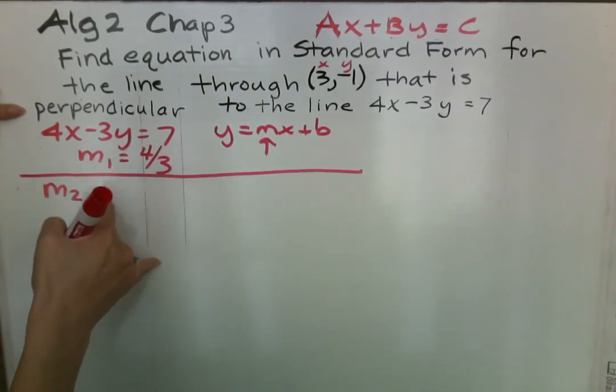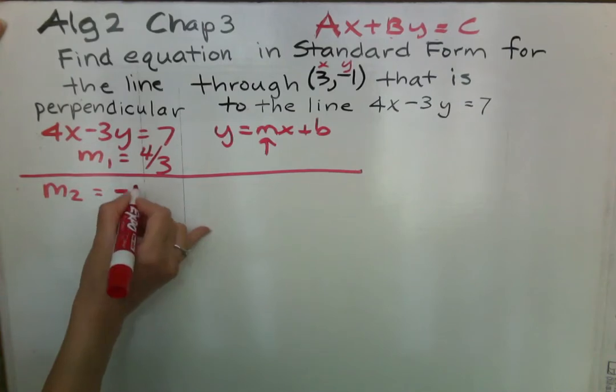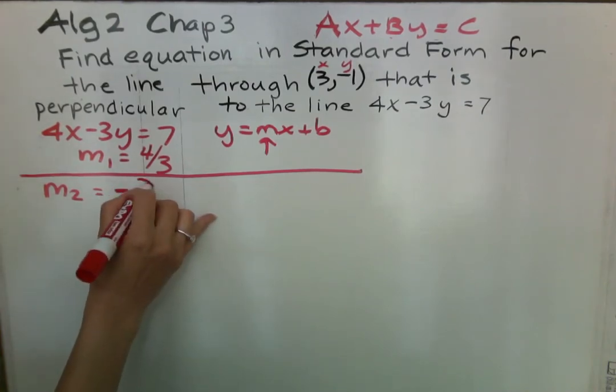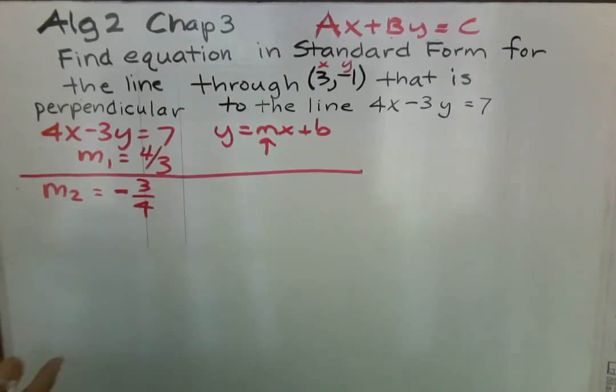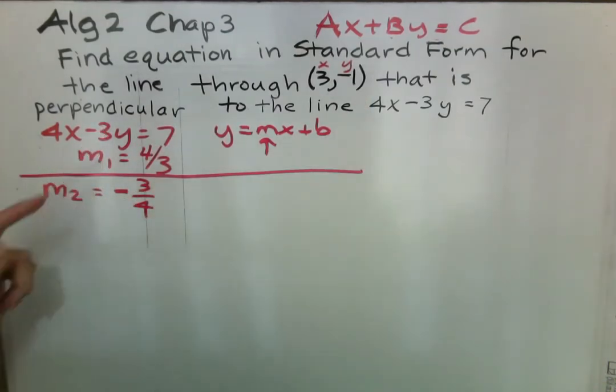The slope of perpendicular lines are the opposite sign, so if this is positive, now it's negative, opposite reciprocal, so now it's a negative 3 fourths. So two lines that are perpendicular have slopes that are opposite sign and reciprocal.